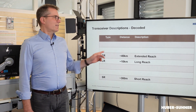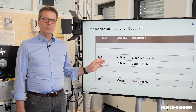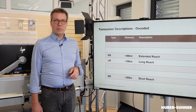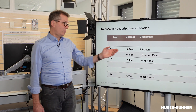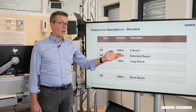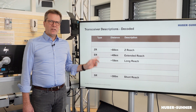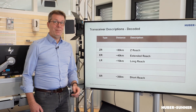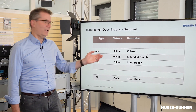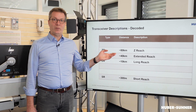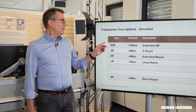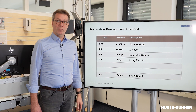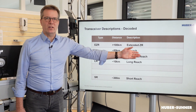Beyond that there is extended reach, ER, up to 40km. And then we find descriptions like ZR, which is up to 80km. But since those letters are not standardized, nobody really knows what Z stands for. I like the description of 'best range,' but again it is not standardized — you can take whatever you want.